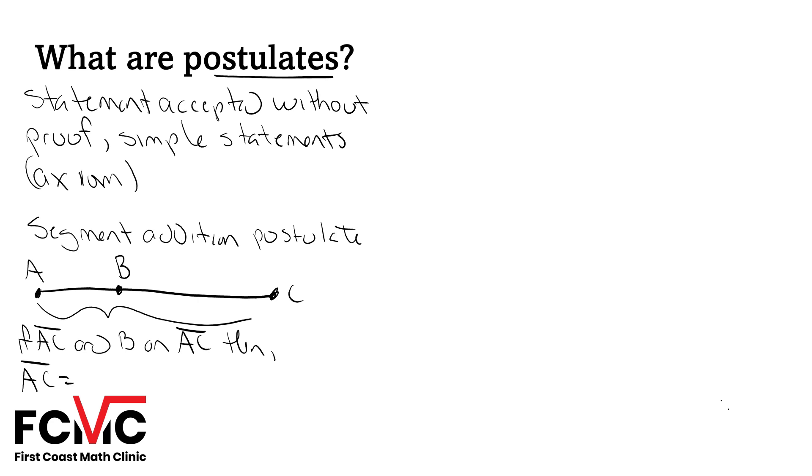Well, to get that length AC, we know we can add up our smaller segments, AB and BC, and that'll give us the length of our larger segment AC.